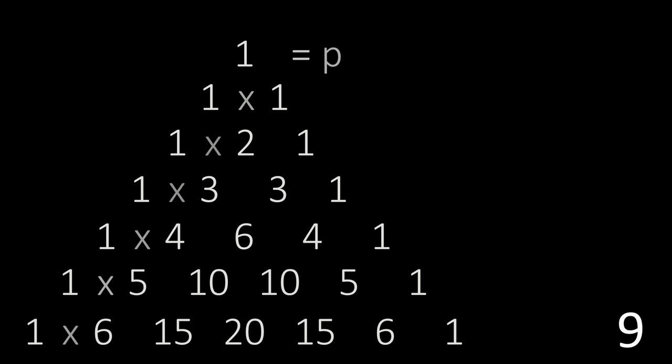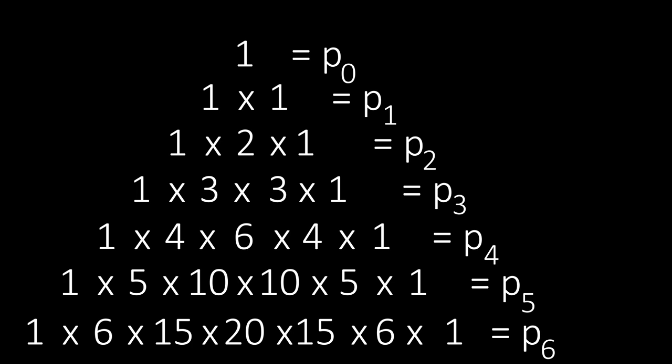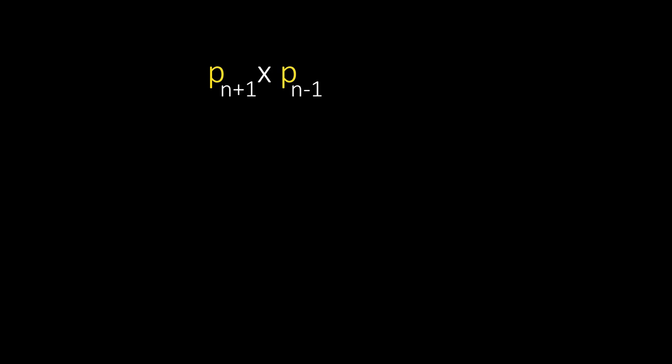Now for e in Pascal's Triangle, we look at the product of numbers in each row and denote them with pn. Now look at the nth row. Multiply the two neighboring rows together and then divide this by the square of the middle row. Then this expression equals 1 plus 1 over n to the power n, which approaches e as n approaches infinity.